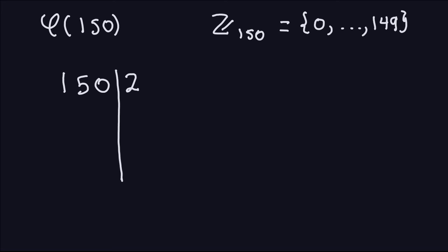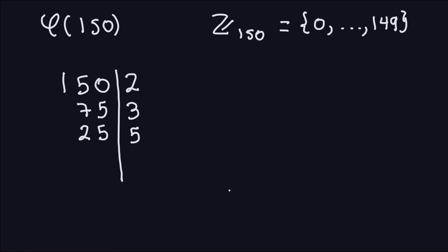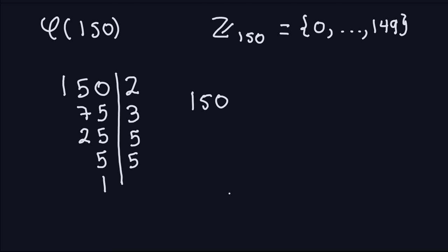Half of 150 is 75. Now 75 is divisible by 3, because 7 plus 5 is 12, which is divisible by 3. So 3 into 75: 3 into 7 goes 2 times with remainder 1, bringing down the 5 gives 15, and 3 into 15 is 5 times, leaving 25. Then 25 is not divisible by 3, but is divisible by 5: 5 into 25 is 5, and 5 into 5 is 1. So 150 equals 2 to the first power times 3 to the first power times 5 to the second power, since we have two copies of the factor 5.